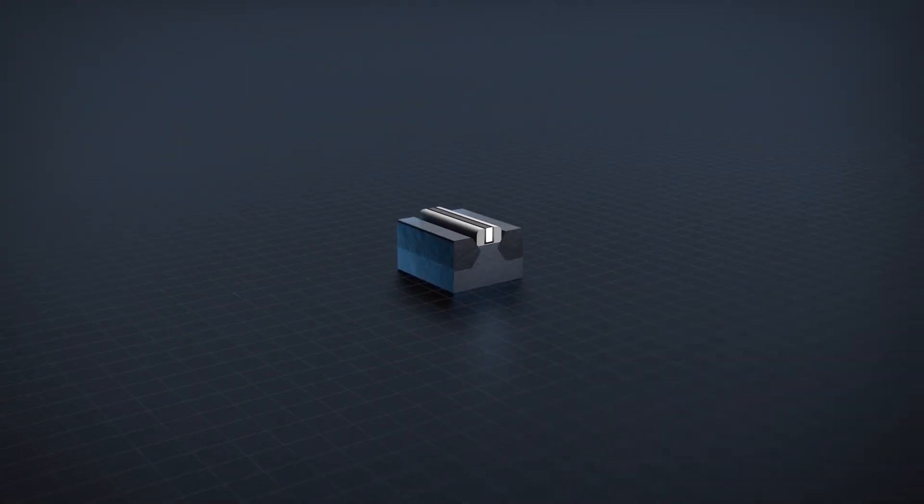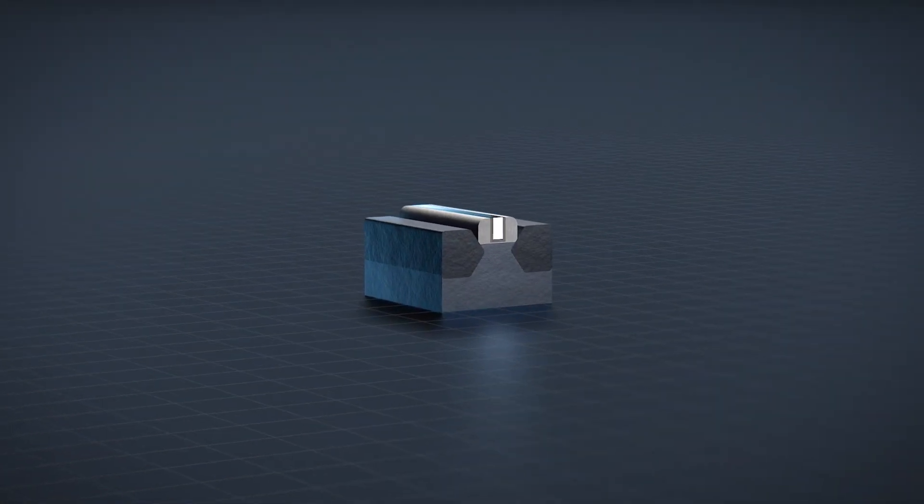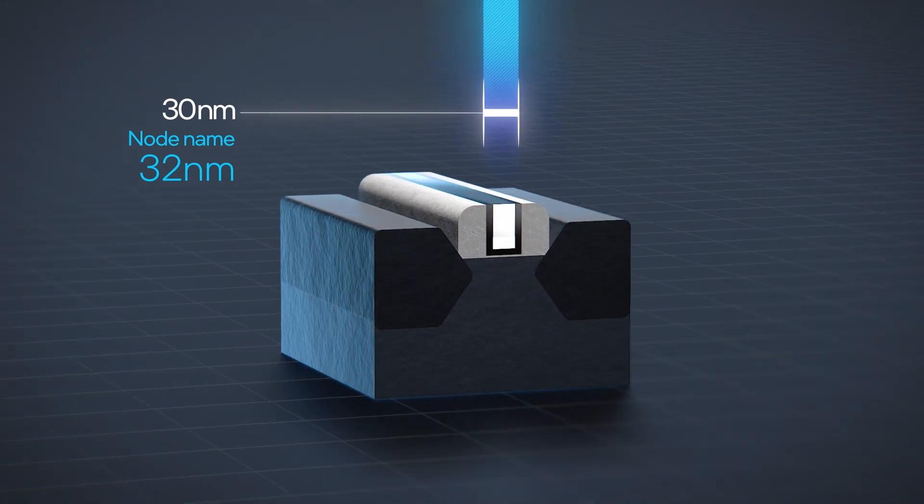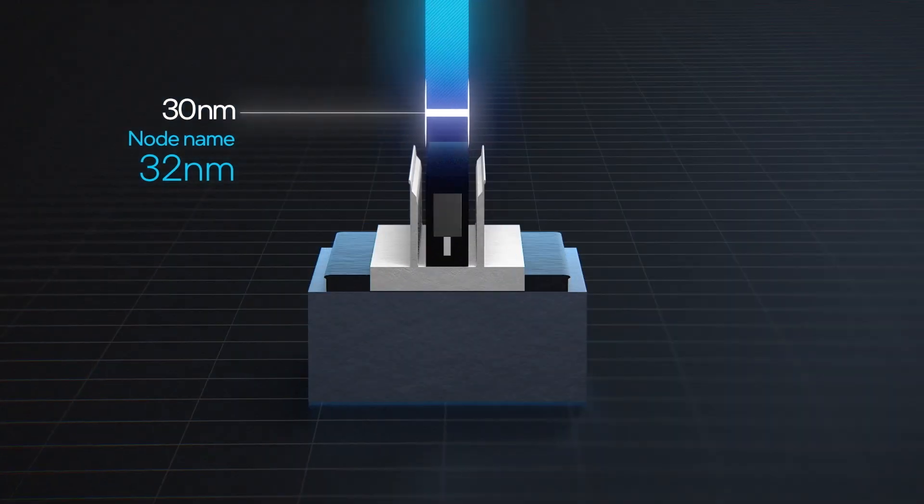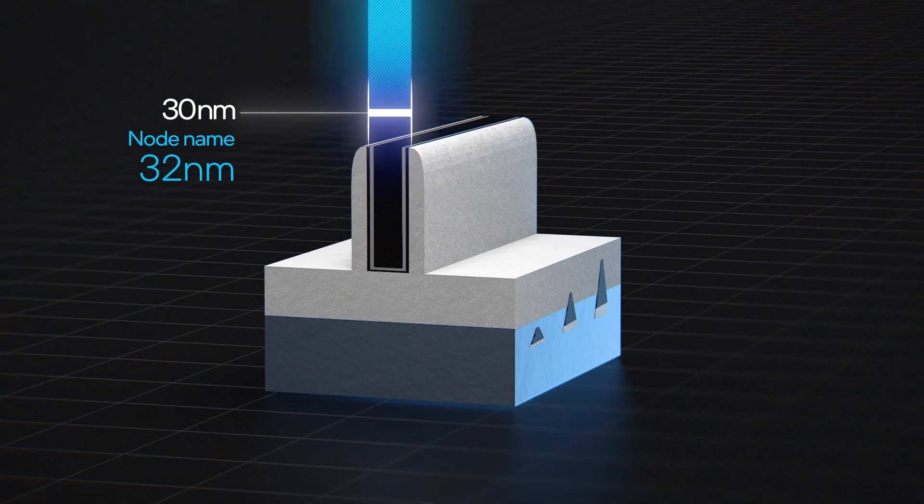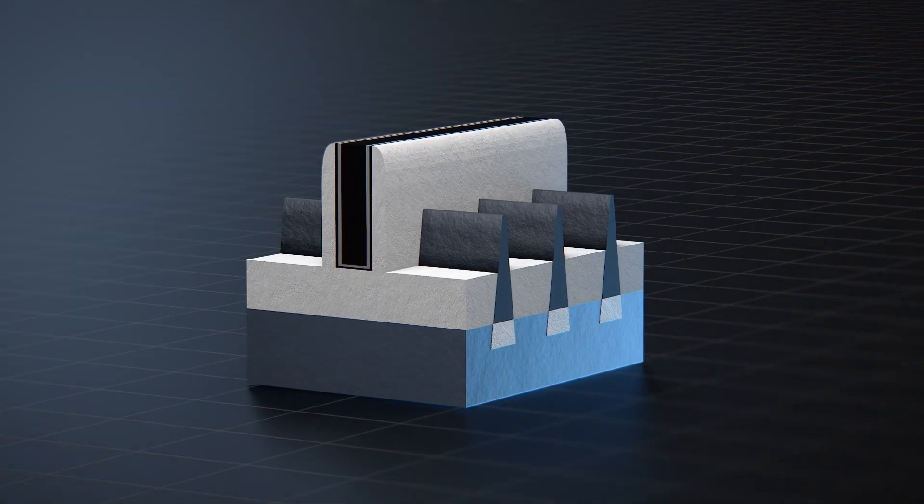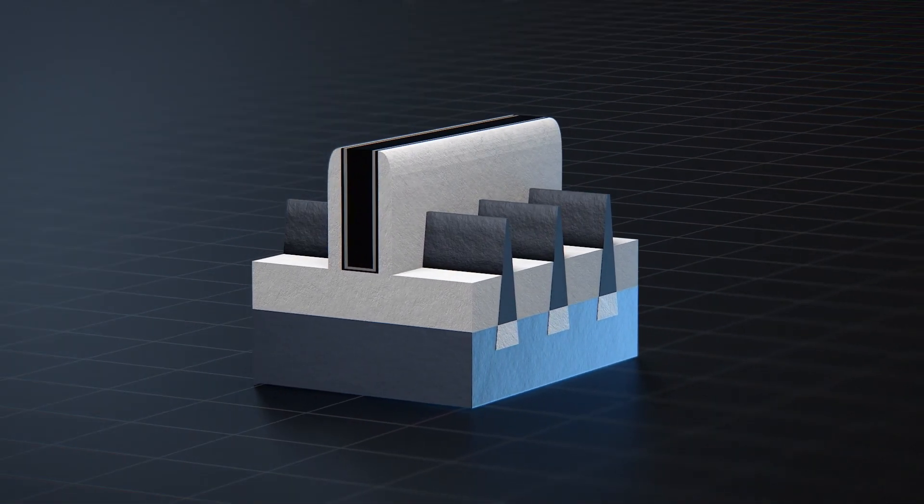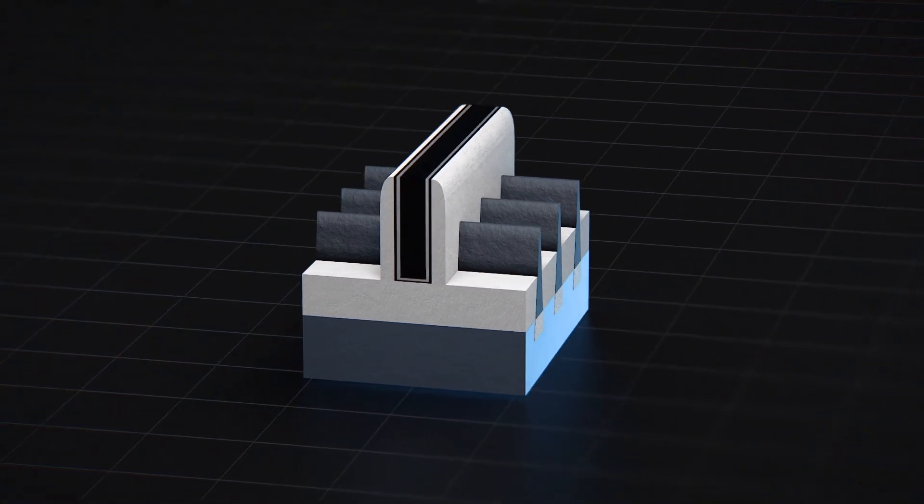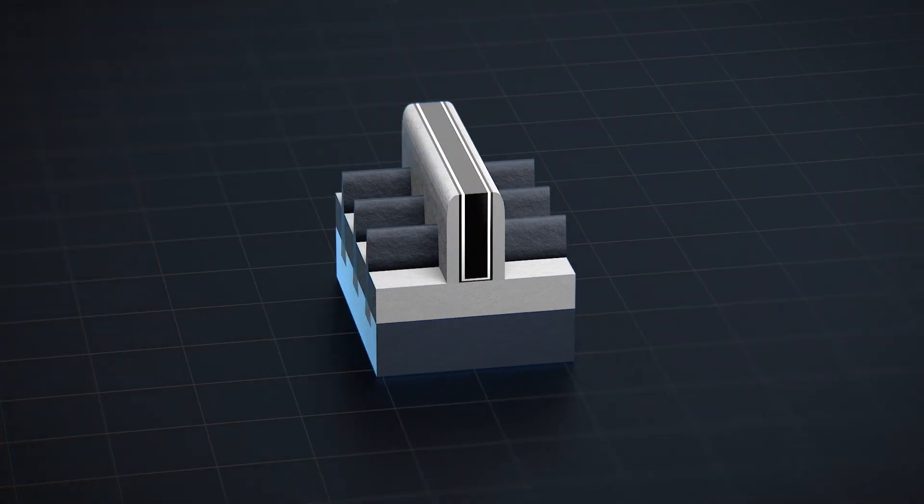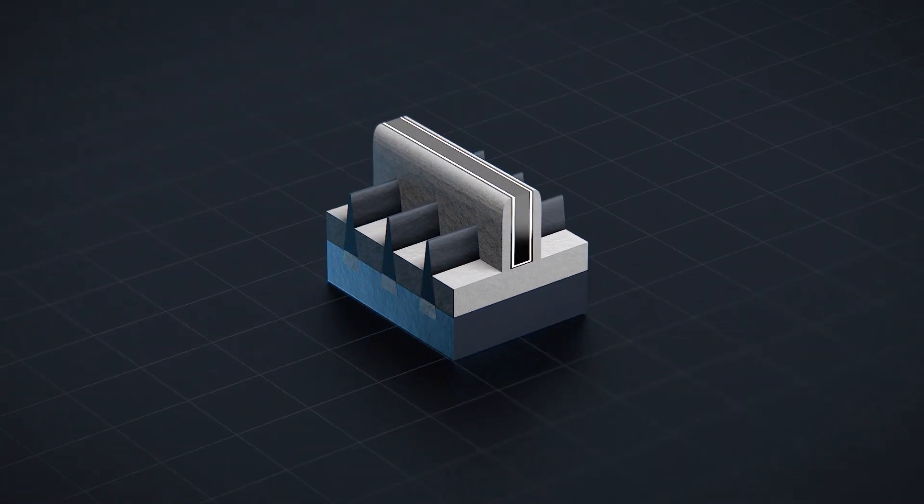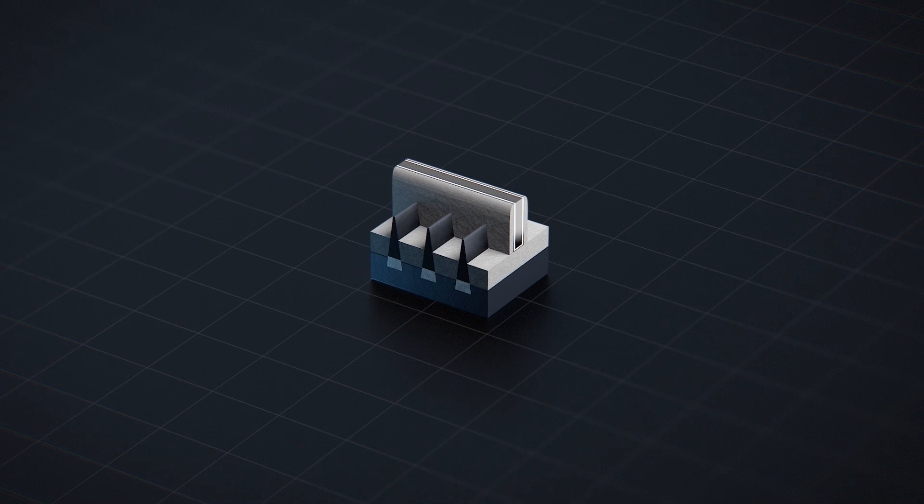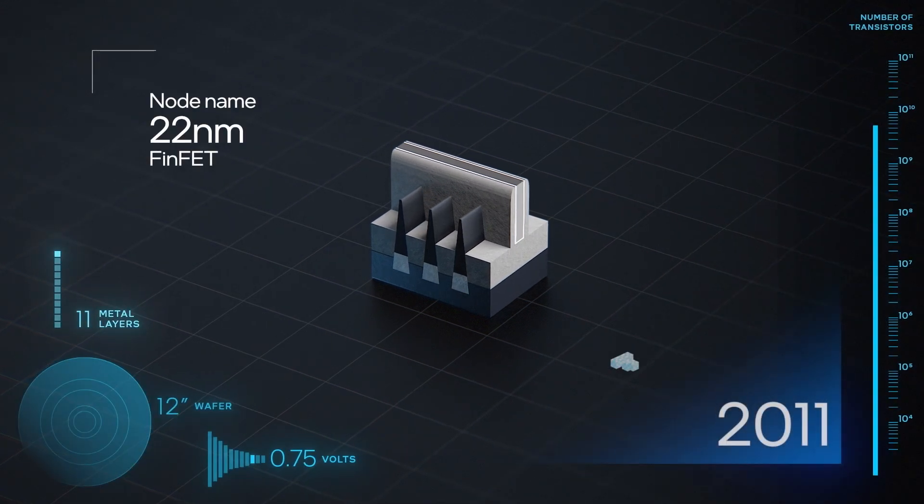A radical innovation was needed to control leakage from the electron channel. This innovation would transform the planar transistor from 2D to 3D, reducing the importance of gate length as a primary metric. In this FinFET design, multiple electron channels emerge from the substrate and the gate wraps around them. This allows for greater control over the current.